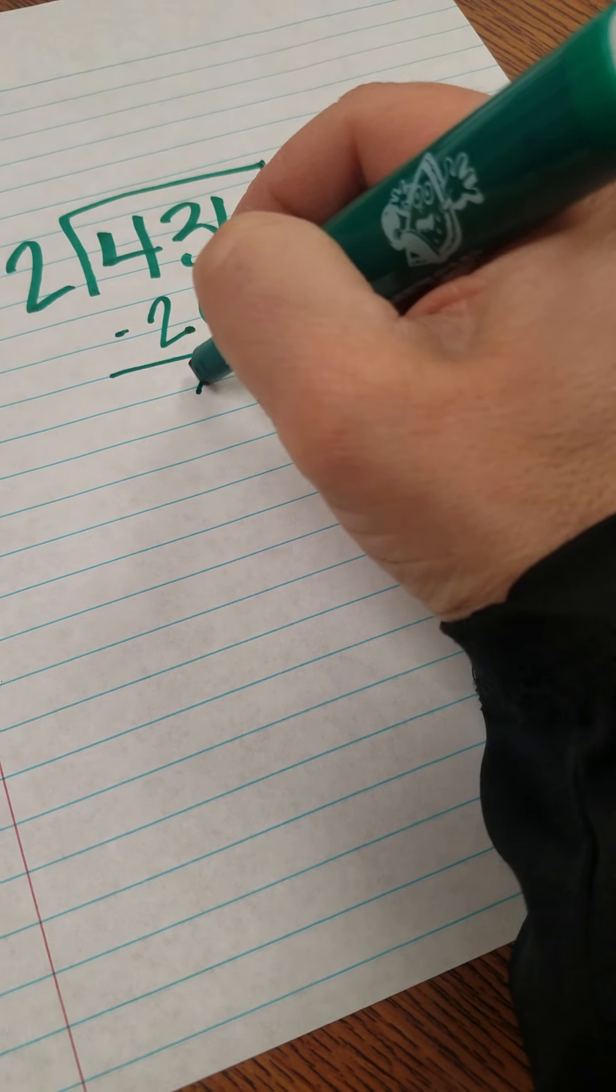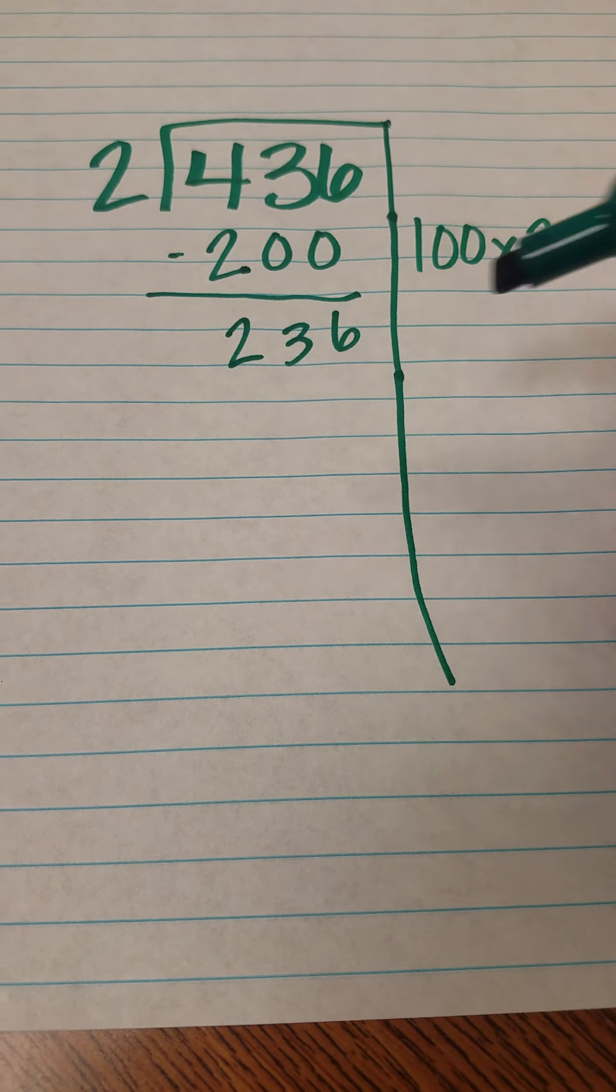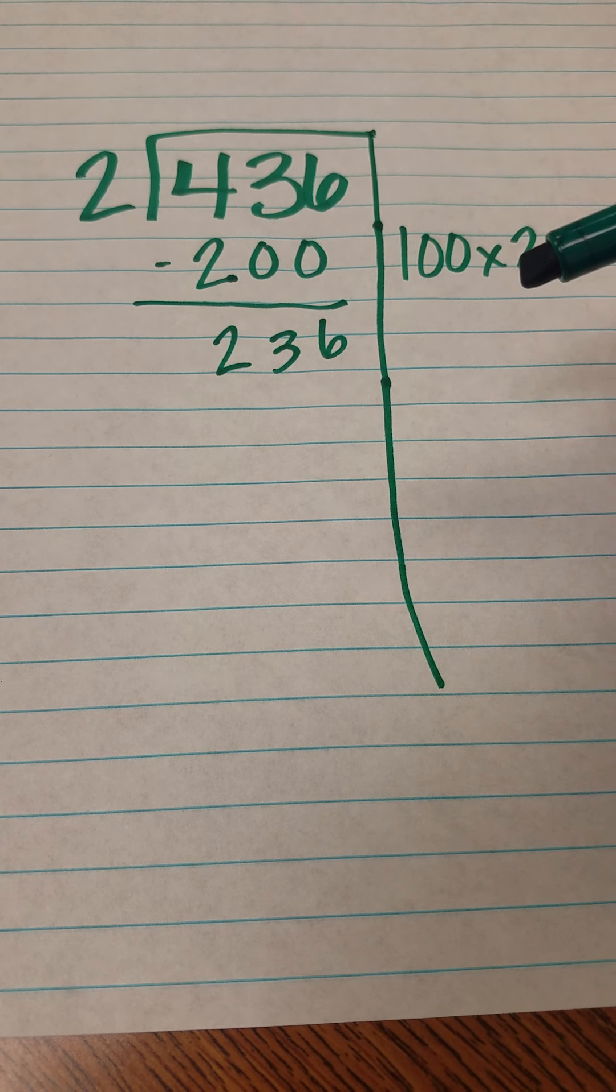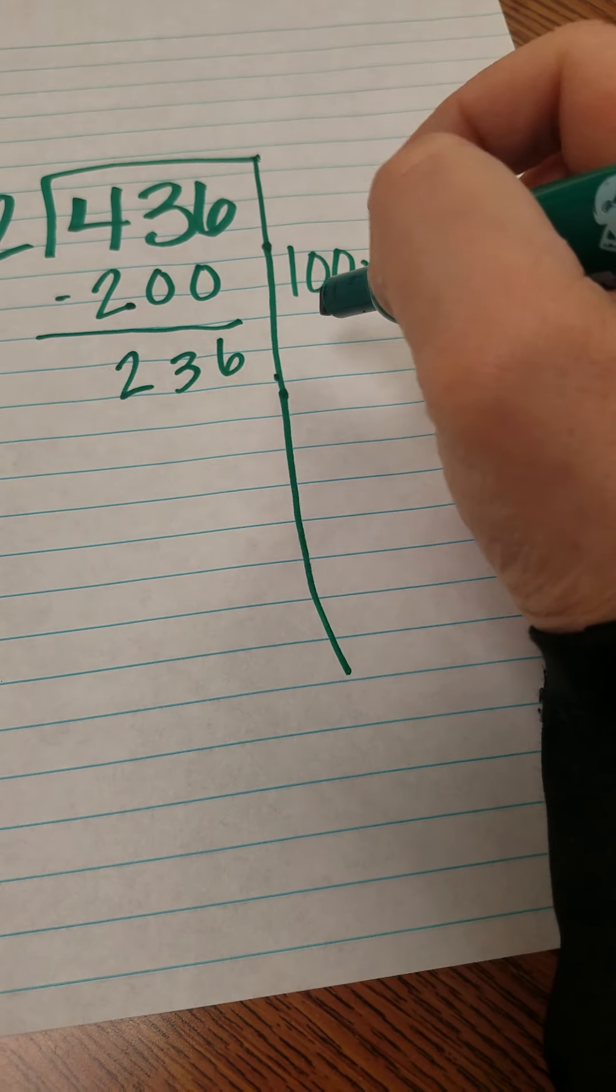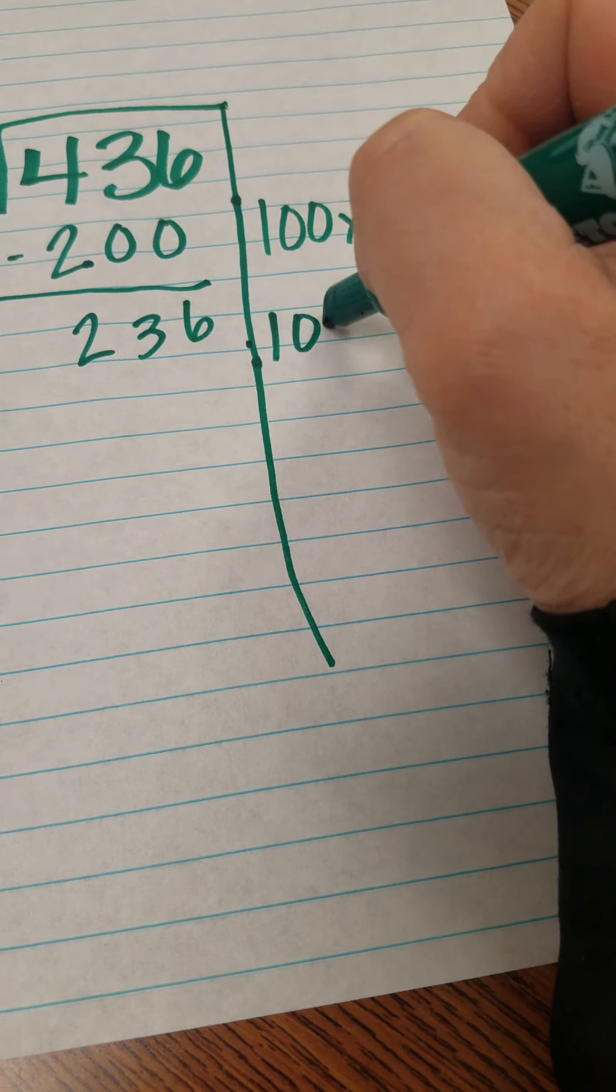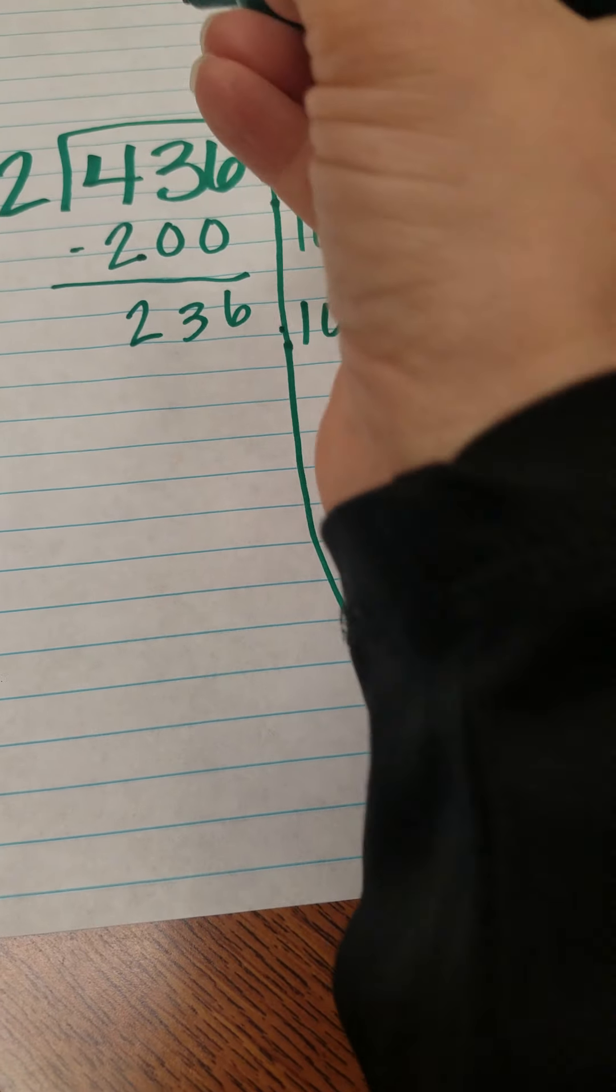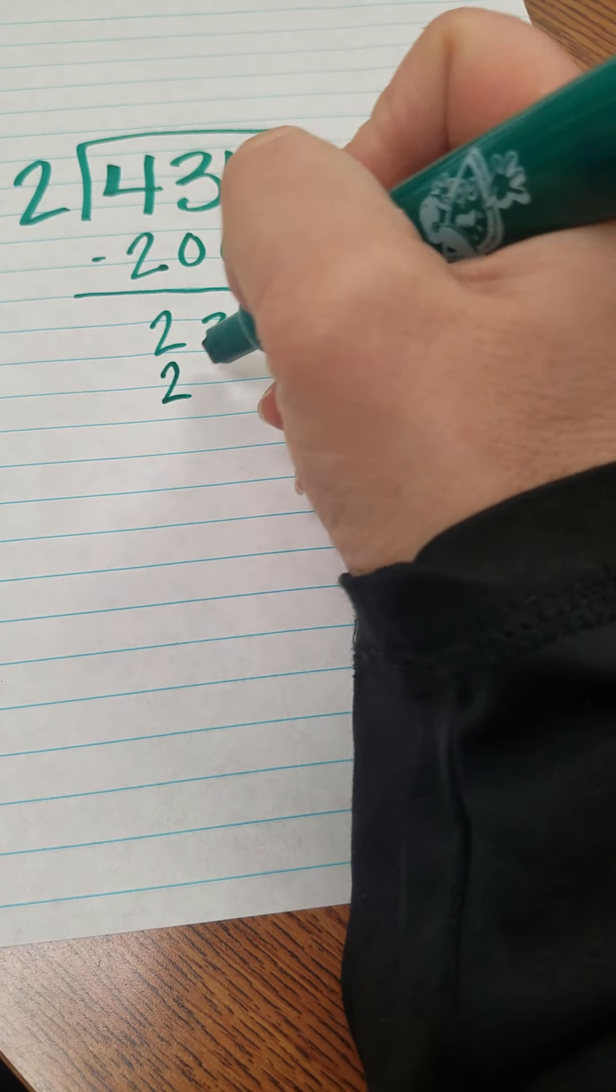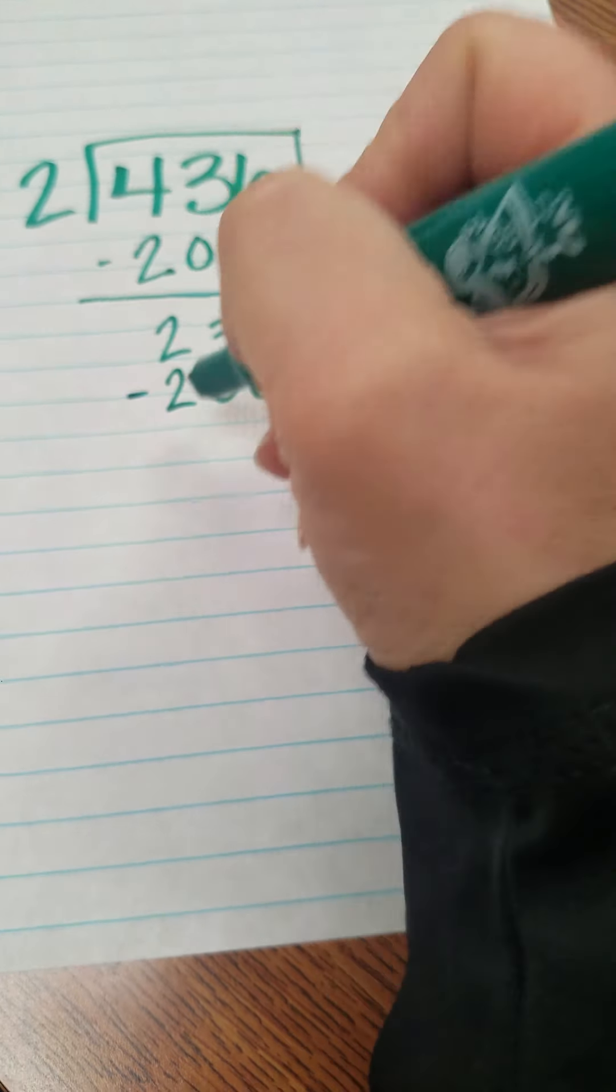Now from here I like this because I'm just subtracting with zeros, I don't have to regroup this way. Now look at 236, can I do another 200? The answer is yes, so I'm going to do 100 times 2 and then I again have 200, so I'm pulling out that amount. Hopefully you can see my writing here.